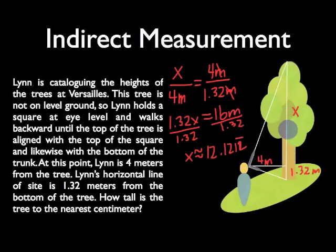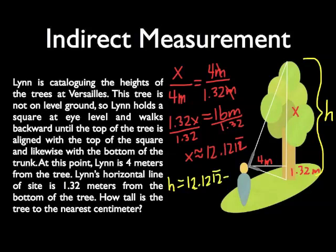Hopefully, you're noticing it's not the entire height of the tree. The entire height of the tree happens to be not only the x, but the 1.32 meters. So our height is going to equal this 12.1212 repeating plus the 1.32 meters.